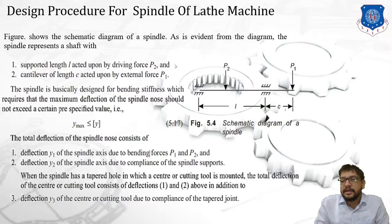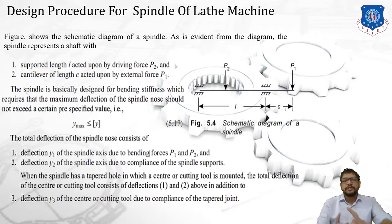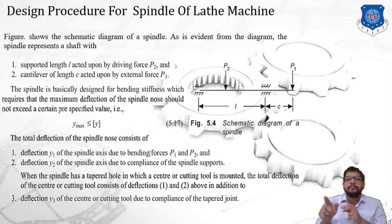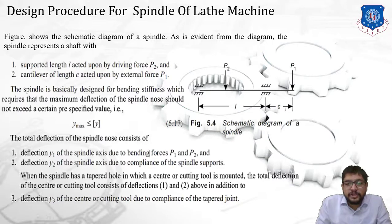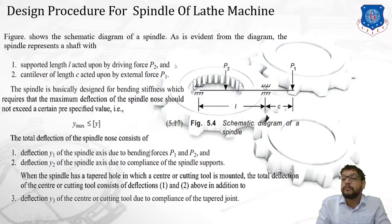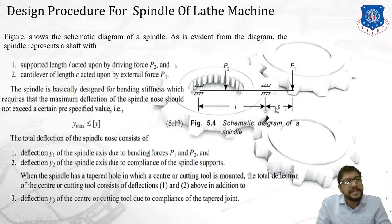As you can see, a schematic diagram representing a spindle is shown. From the figure we can say that the spindle represents a shaft with two conditions: first, a supported length L between the bearings acted upon by the driving force P2; and second, a cantilever of length C acted upon by the external force P1. The portion representing small L will be inside the headstock, supported by bearings, while the portion hanging outside the headstock acts as a cantilever beam of length C, with force P1 acting at its free end.